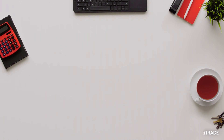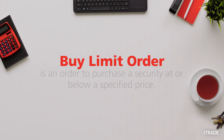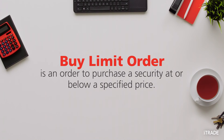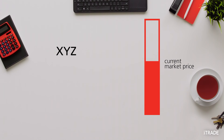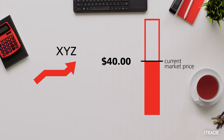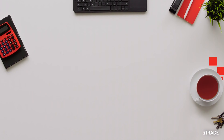A buy limit order is an order to purchase a security at or below a specified price, allowing traders and investors to specify the price they are willing to pay for a security. You are now interested in the potential for stock XYZ, which is priced at $40.